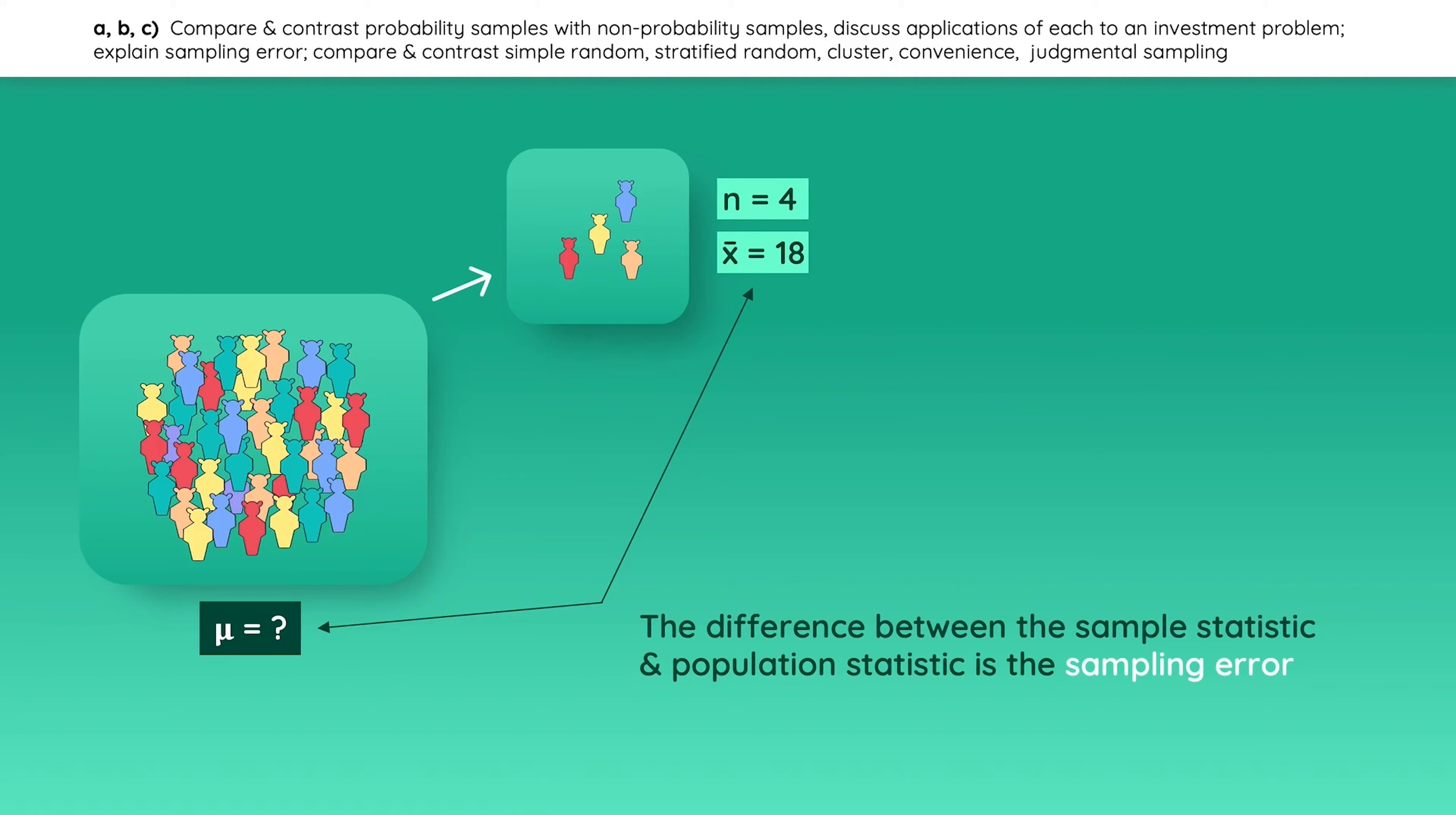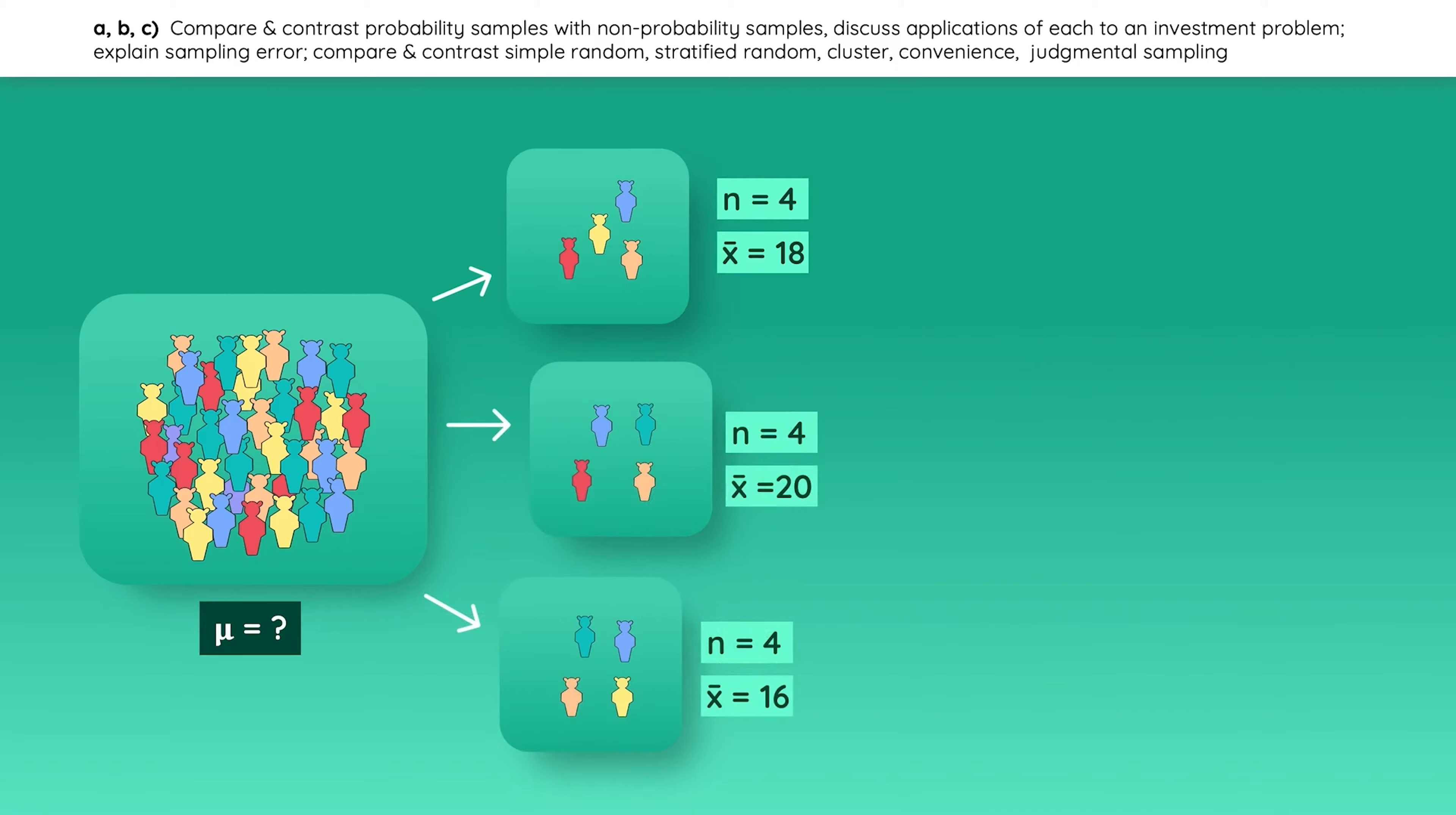However, if you want the best estimate of the population mean, you cannot just have one sample and call it a day. So let's draw a few more samples of equal size and calculate the average age for each. Now you are left with a bunch of sample means from samples that were all taken from the same population. As you keep taking more samples, you will eventually be able to plot the sample means into a distribution. And this number right here, the average of all sample means, is a good estimate of the population mean.